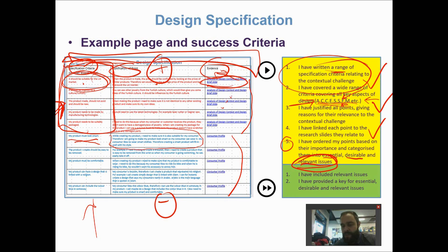You can also go one step further and highlight relevant issues — the moral, environmental, social, and sustainability criteria. This applies to both the legacy specification and the new design specification for the product design or design technology course. It's good practice to highlight these separately, perhaps in green to represent the environment, making your design specification more comprehensive and showing you're covering all the key points.